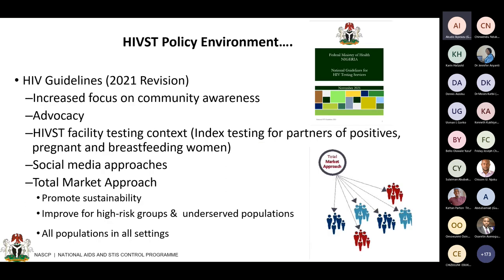Within that 2020 document, the focus included risk stratification, recency testing, index testing, social network testing, nucleic acid testing, and birth testing — all areas of innovation in which self-testing was clearly captured. For this year, revised HIV guidelines have amplified areas relating to self-testing, with the document expected to be released in the coming weeks. It captures the need to increase community awareness, advocacy, facility-based self-testing, index testing, testing of partners of positives, pregnant and breastfeeding women, social media approaches, and total market approach.